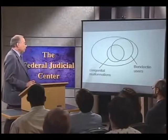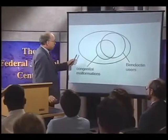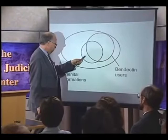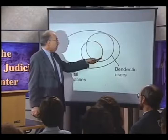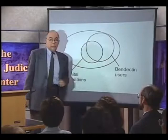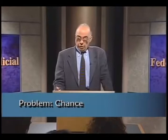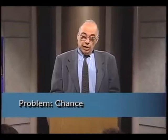What usually happens, however, is that we have a partial overlap of the two circles. There are women who have a child without malformations who didn't take Bendectin, and many Bendectin users never had an abnormality in their child. And yet there's an overlap area of women who took Bendectin and whose children had malformations. This overlap has taken place by chance — not because Bendectin caused the malformation, but just because you would expect with these two sized circles that there would be some overlap between the two.